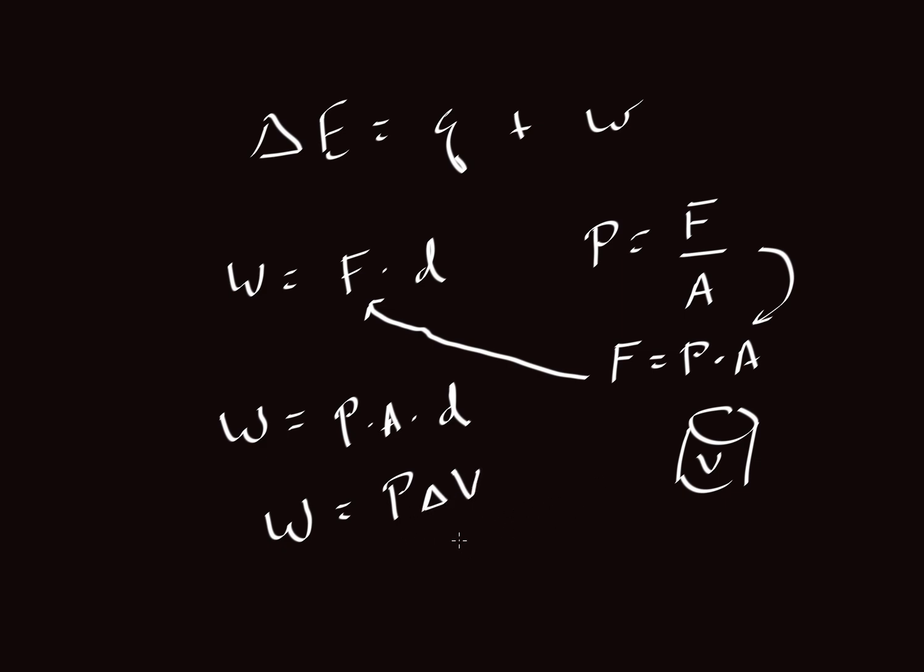So we can think of work as pressure times some change in volume. This is sometimes called PDV work because instead of delta where we have a finite difference, we'll use dV where it's an infinitesimal change in volume. But anyway, we'll clear the chalkboard again and just rewrite this with our new term. So delta E, the internal energy in a system, is equal to Q plus PΔV where PΔV is our way of expressing work.